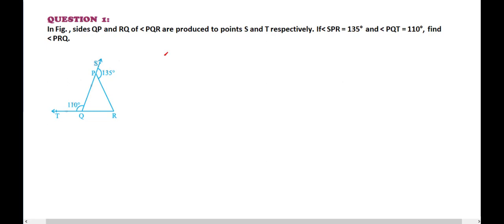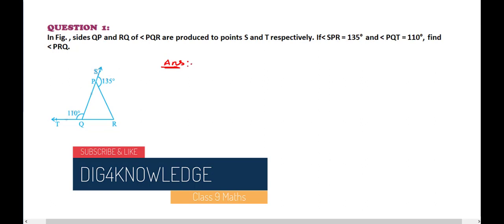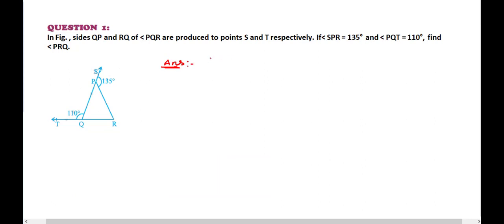Exercise 6.3, Question 1. In the figure, sides QP and RQ of angle PQR are produced to points S and T respectively. If angle SPR is equal to 135 degrees and angle PQT is equal to 110 degrees, find angle PRQ. Let's solve it.